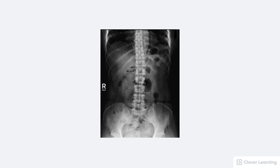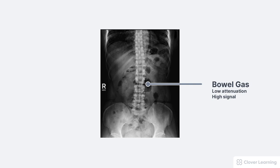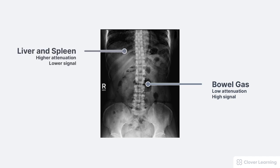For example, in this radiograph of the abdomen: low density areas like this bowel gas attenuate only a little radiation, so a high radiation signal exits the patient in this area. Medium density areas like the liver and spleen attenuate more radiation, so lower radiation signal exits the patient in these areas.